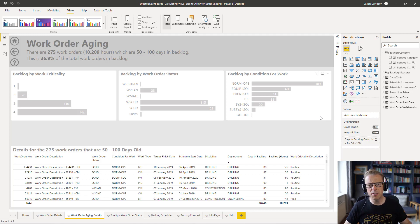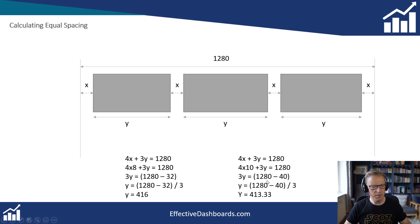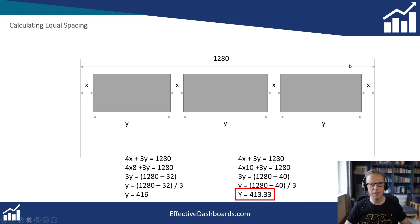So what happens if you want the spacing to be something other than 8? Let's look at that scenario. This time we want the distance between them to be 10. We carry out exactly the same calculation, but this time we are replacing the 32 by 40. And if you see here, it gives us a decimal: 413.33. Let's go back and make those changes.